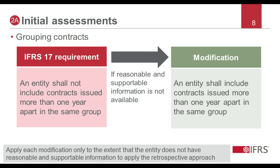Applying IFRS 17, an entity must not include contracts issued more than one year apart in the same group based on information at initial recognition. When the entity does have reasonable and supportable information, it applies this requirement. The modified retrospective approach provides a relief from this requirement when the entity does not have reasonable and supportable information. In this case, the entity shall group contracts that are issued more than one year apart.